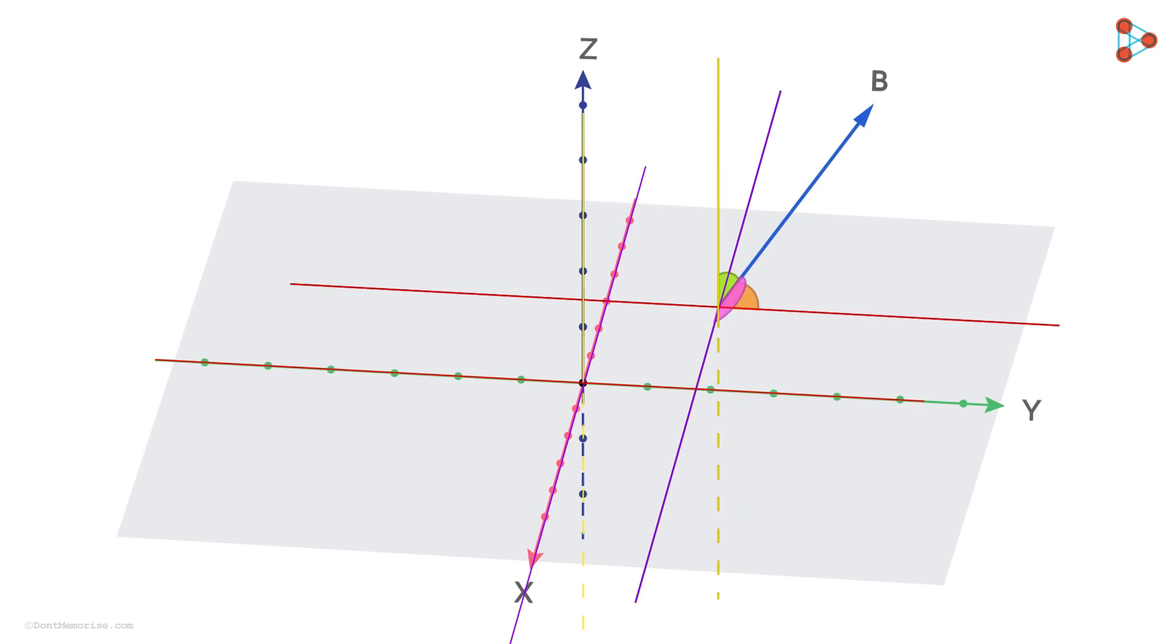Moreover, if we draw a vector parallel to vector b passing through the origin and in the same direction, then the set of direction angles of this vector will be the same as vector b because they both are pointing in the same direction. In fact, all of the vectors parallel to vector b and in the same direction will have the same direction angles.